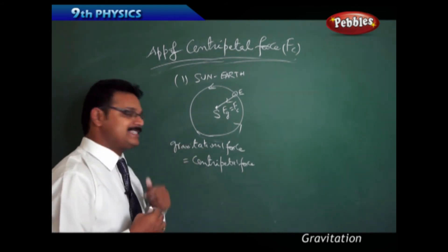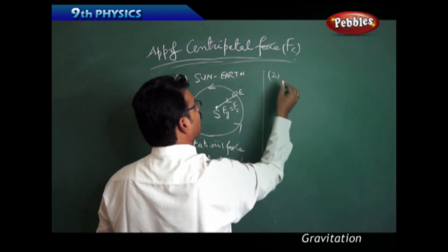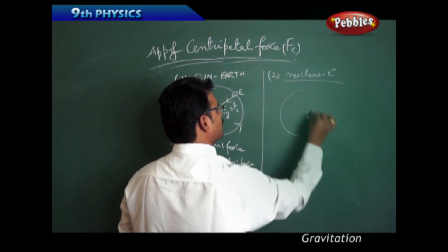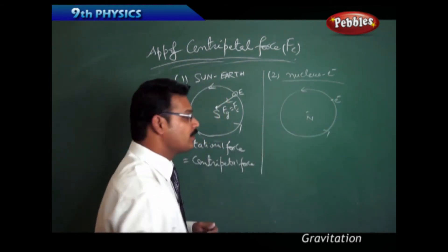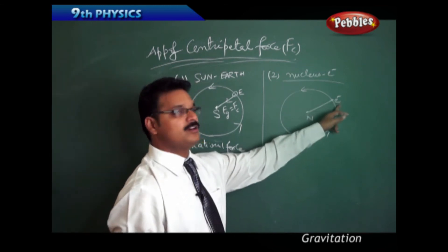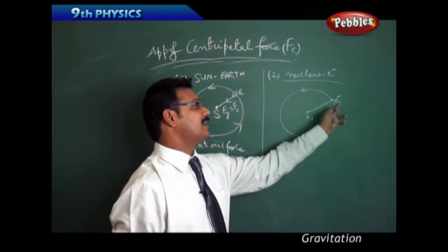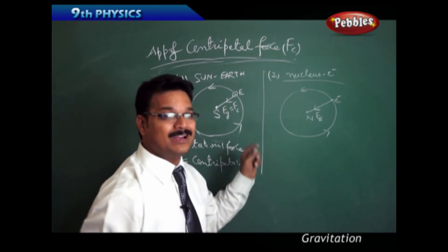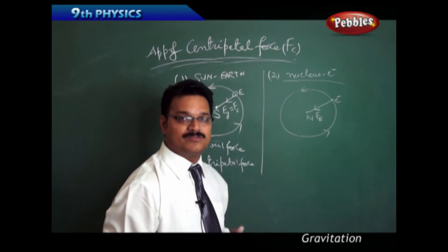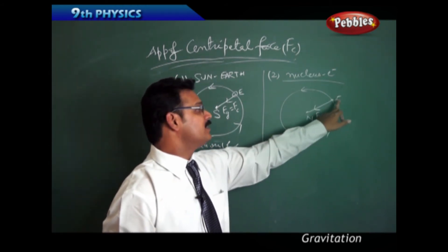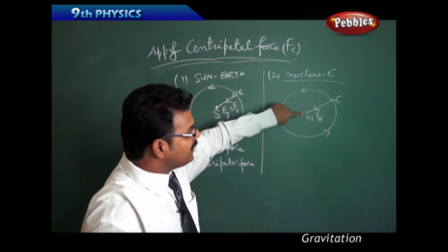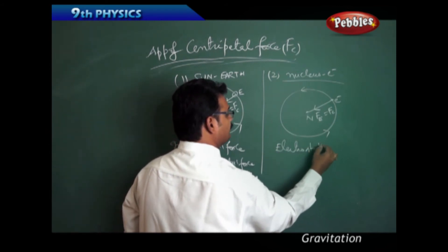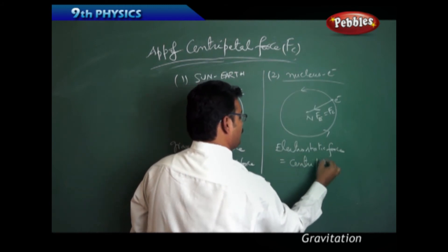Take another example: the nucleus-electron system. The electron revolves around the nucleus. There is an attraction force between them because the nucleus is positively charged and the electron is negatively charged. This attraction force is not gravity — it is called Coulomb force, or electrostatic force. This electrostatic force acts towards the center of the circular path, so here electrostatic force equals centripetal force.